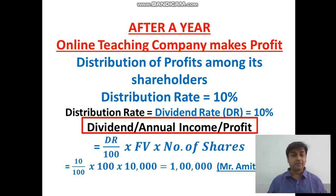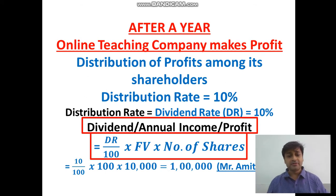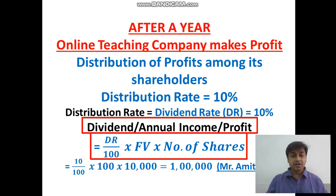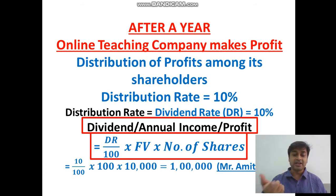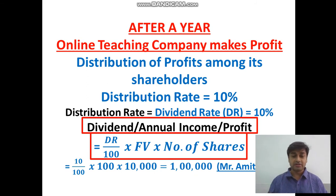Let's move a little forward. The formula — do you remember? Annual income equals to dividend rate upon 100, into face value, into number of shares. Face value is what the company has got, and number of shares is what the shareholder holds.